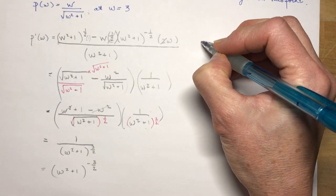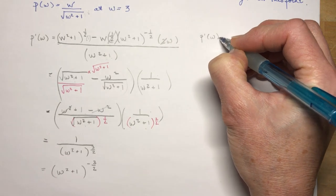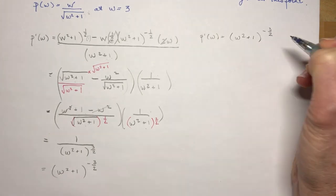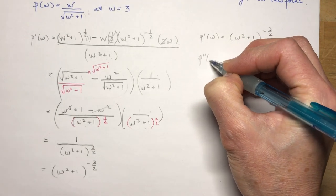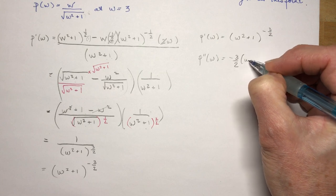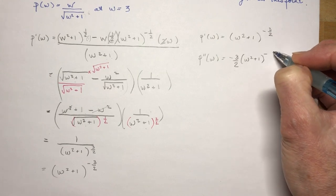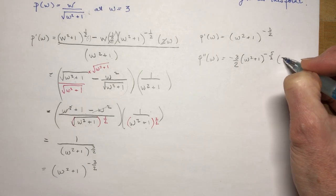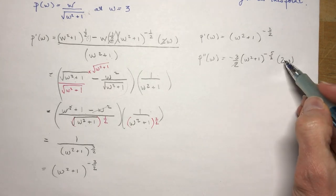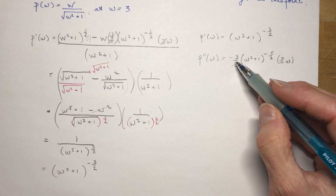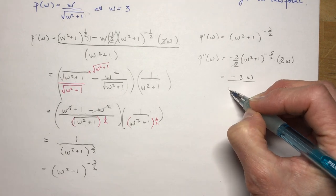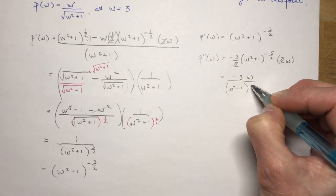So p''(w) is going to be: bring the exponent to the front as minus three-halves, leave the base alone, reduce the exponent by one. Times the derivative of the inside, which is 2w. When I simplify that, the twos will cancel out. So p''(w) = −3w / (w² + 1)^(5/2). Make sure you remember what belongs in the denominator — the negative exponent puts it there, not the −3 coefficient.